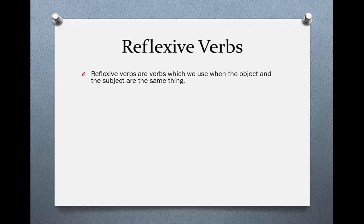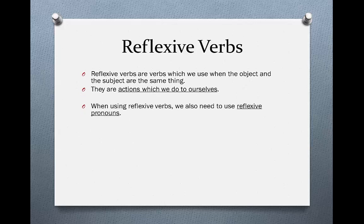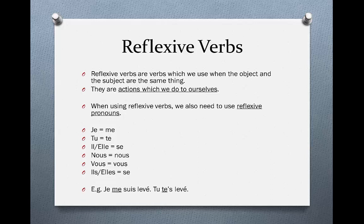Reflexive verbs. Reflexive verbs are used when the object and the subject are the exact same thing — they are actions which we do to ourselves. When using reflexive verbs, we also need to use reflexive pronouns: me for je, te for tu, se for il/elle, nous for nous, vous for vous, and se for ils/elles. We have to put this reflexive pronoun right after the actual pronoun, and this all comes before the auxiliary verb. For example, je me suis levé or tu t'es levé.